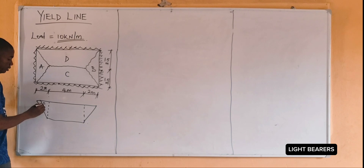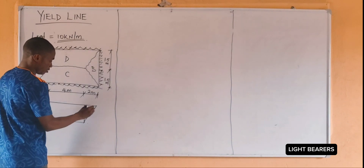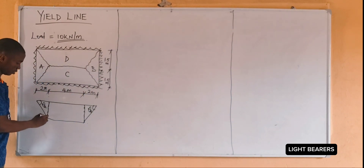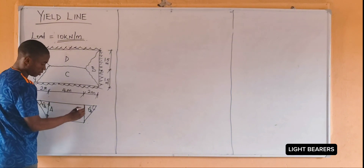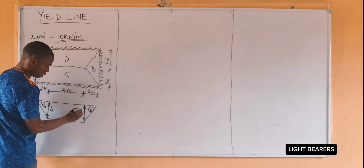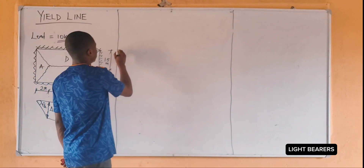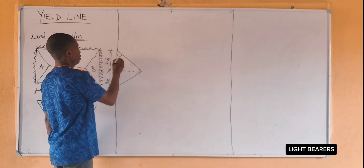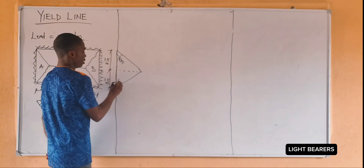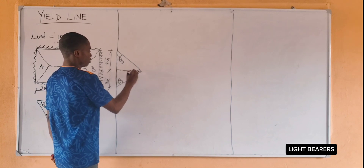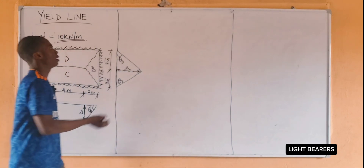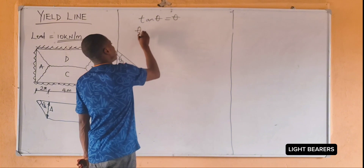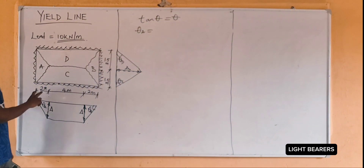The angle here is theta A for panel A, and the angle here is theta B for panel B. Here the displacement is taken as delta, and here also taken as delta. The angle here is theta D, and the angle here is theta C. Here it means delta. Now, tan theta equals theta.